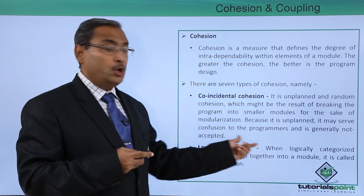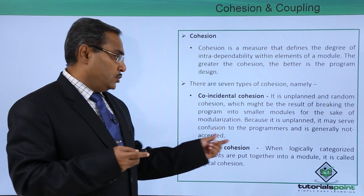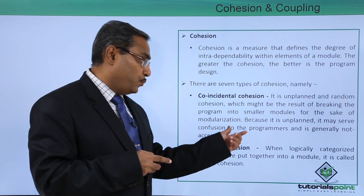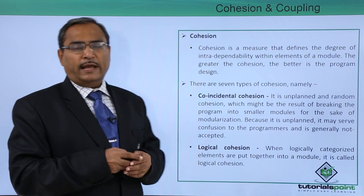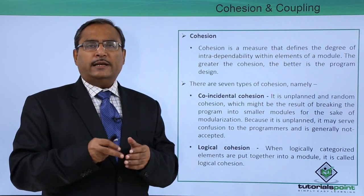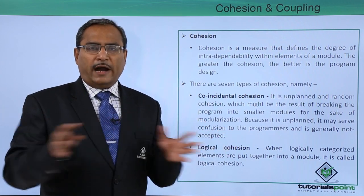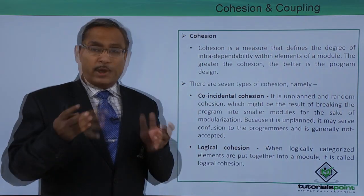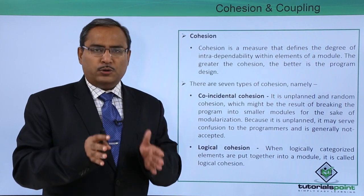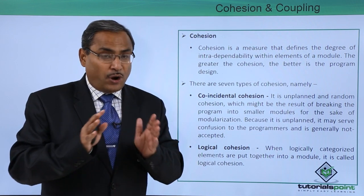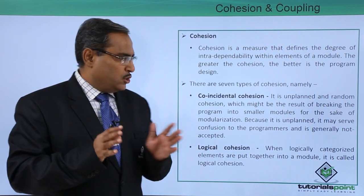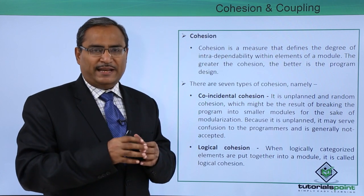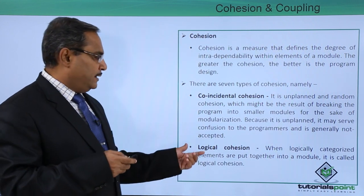Because coincidental cohesion is unplanned, it may cause confusion to the programmers and is generally not accepted. For example, if we have a long code and we divide it arbitrarily into certain modules to implement modularization, the instructions that end up in one module are coincidental — they are not properly related to each other. This sort of cohesion will produce confusion for the respective developers.